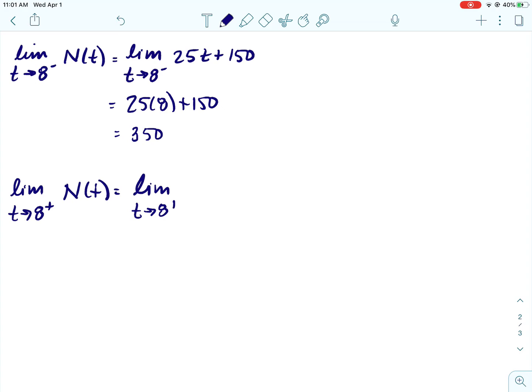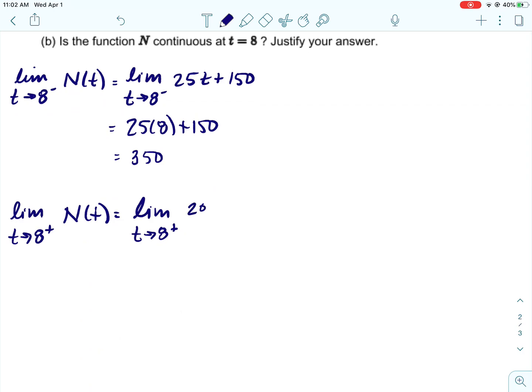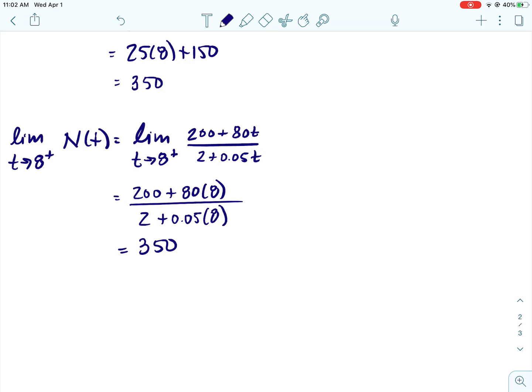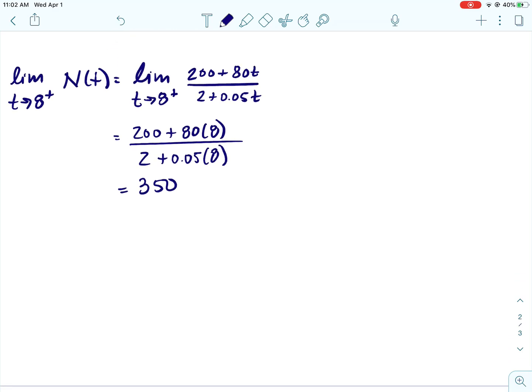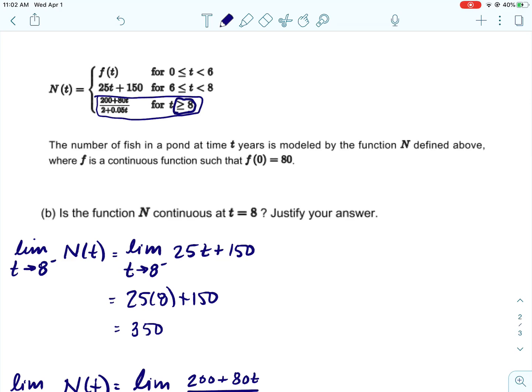And then we would do the same thing but approach 8 from the right. Whenever we're approaching from the right, approaching 8 from the right, we would use this function. Again, nothing weird is happening at that function when t is 8, so we would just go ahead and plug that in. This wouldn't be super fun to do without a calculator, but I think you would have plenty of time. I'm hopefully going to get a little bit more information soon about the calculator situation on the test.